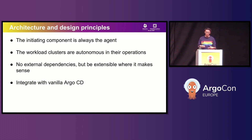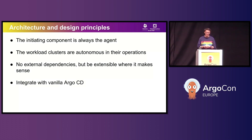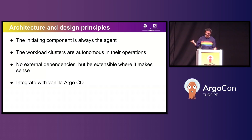Secondly, the workload clusters are autonomous in their operations. The control plane is not and won't become a single point of failure for your topology. Yes, when the control plane or the principal is down you might not be able to configure a new application, modify or delete existing ones, or get centralized observability. But if you make changes to your application manifests in git, the application controller on the workload cluster is still functioning normally — it can still pick it up and reconcile your commit.